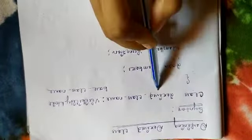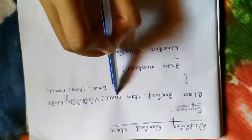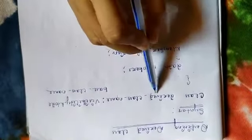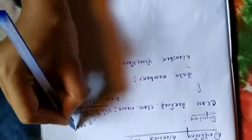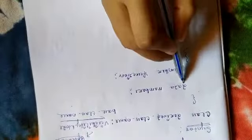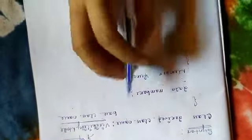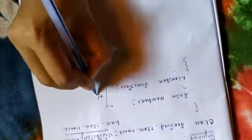Let's see the syntax to define a derived class. First you write the keyword 'class', then the derived class name. Then you write the visibility mode — this visibility mode is optional, it's not mandatory. Then you write the base class name, and inside the body you write the data members or member functions of your derived class.